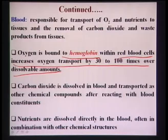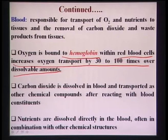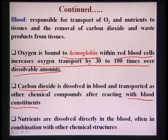Oxygen is bound to hemoglobin within red blood cells, increasing oxygen transport by 30 to 100 times over the dissolved amount. Carbon dioxide is dissolved in blood plasma and transported as other chemical compounds after reacting with blood constituents. Nutrients are dissolved directly in the blood, often in combination with other chemical structures.